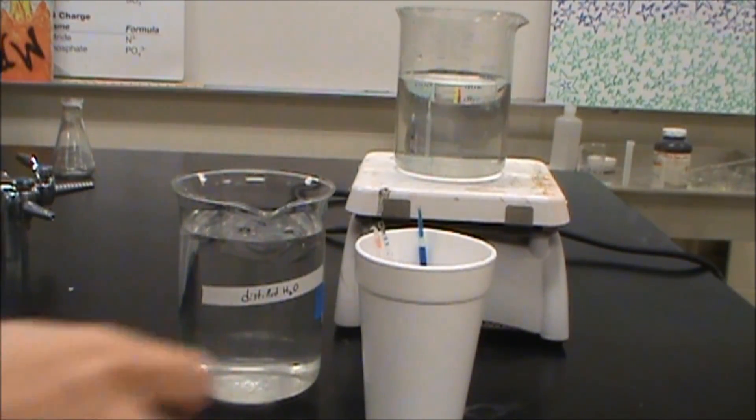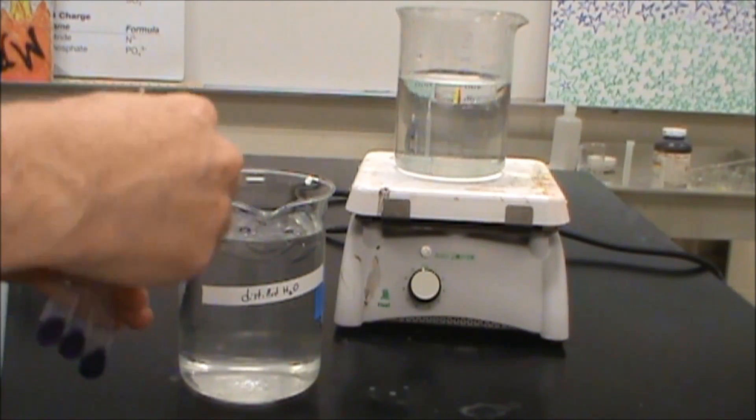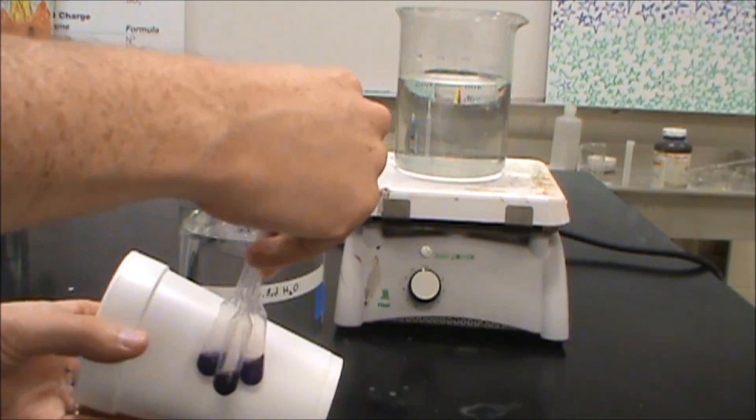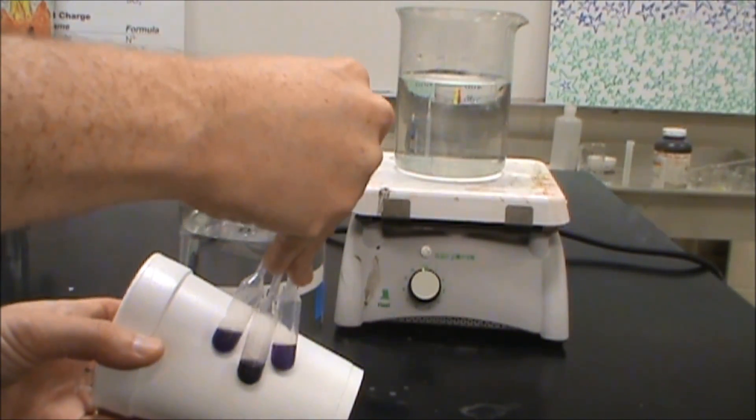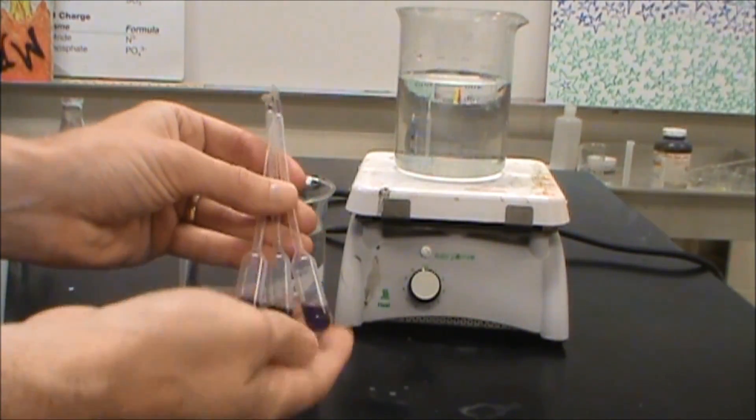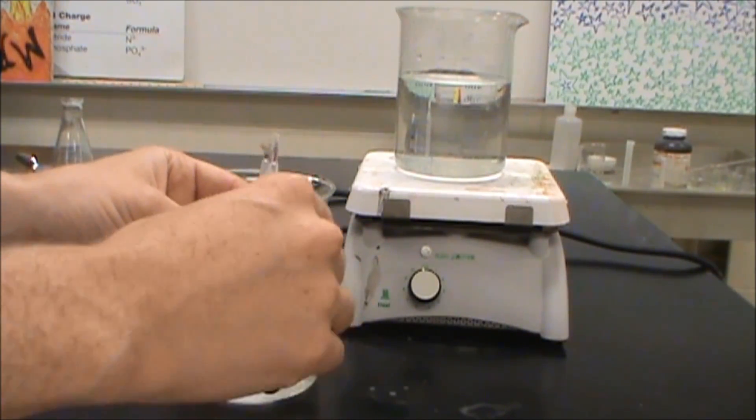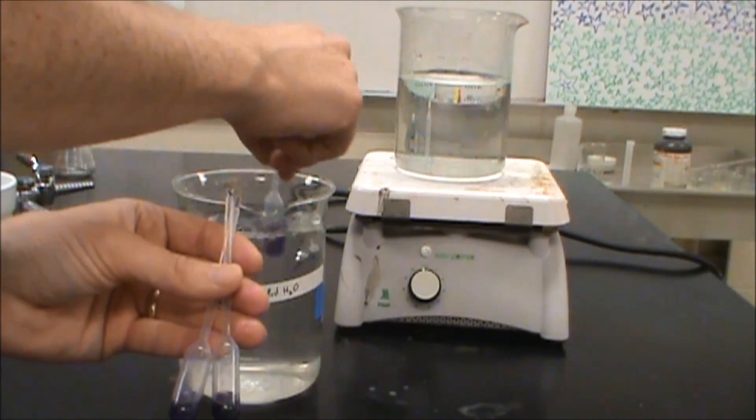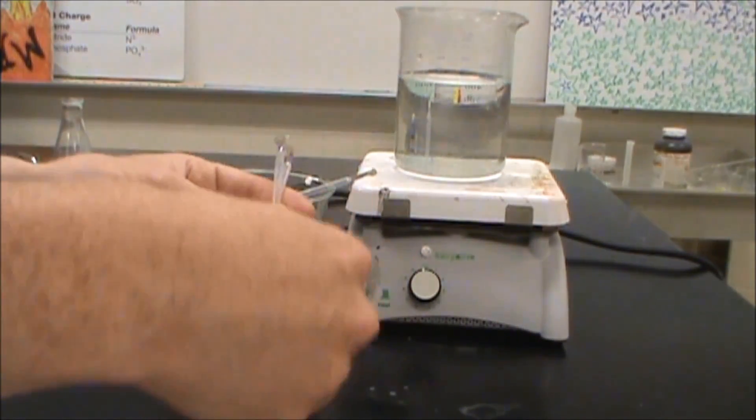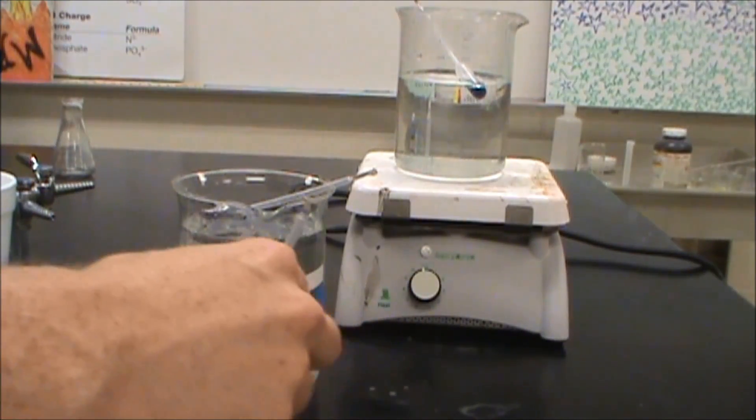So for the final two we're going to change the temperature. I've got three purple cobalt chloride complex mixtures, or cobalt water complex mixtures. And what I'm going to do is I'm going to keep one, I'm going to put one into ice water, and I'm going to put the other one into very warm water.